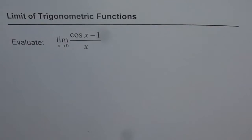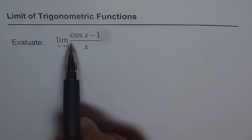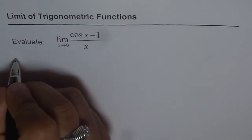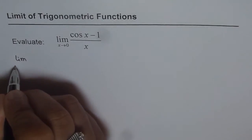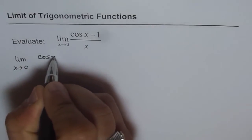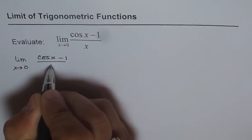Evaluate the limit of cos x minus 1 divided by x when x approaches 0. The best way to solve this is to multiply and divide by the conjugate of cos x minus 1. We have limit x approaches 0 of cos x minus 1 over x.